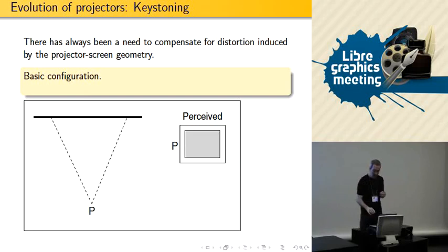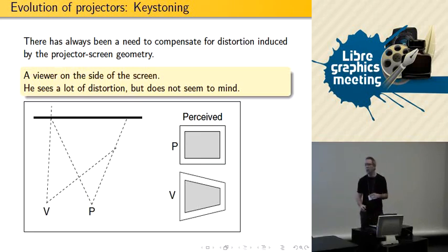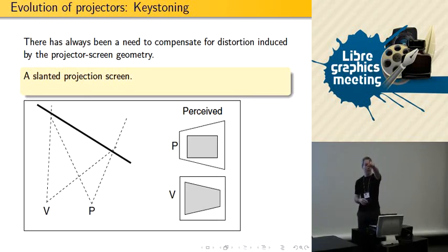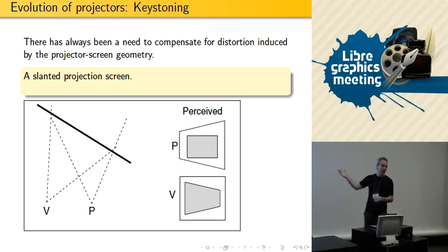If the viewer is on the side, it's not too bad because the view is aligned with the screen. But if the viewer is in front of the screen and the projector is on the side, then nobody will enjoy it because the image will be all squished. People will see a square screen and a distorted image. That's where keystoning comes from — to align the image with the surrounding screen.